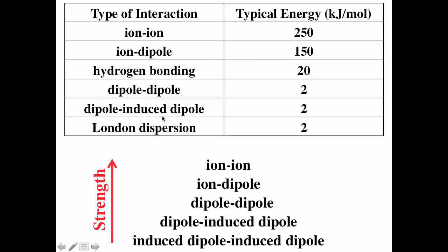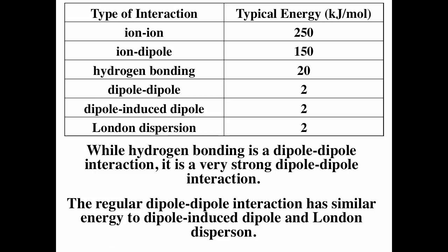For molecules — things without a charge — those bottom four interactions are all that's possible. Notice hydrogen bonding is by far the strongest. If you have a group of molecules and one has hydrogen bonding and the others do not, that one will have the strongest interaction and the highest melting and boiling points. Comparing a molecule versus an ionic compound, the ionic compound will have a much higher melting point. While hydrogen bonding is a form of dipole-dipole interaction, it is an especially strong form — it's the strongest intermolecular force between two uncharged species.